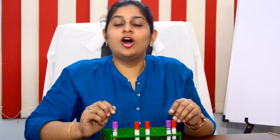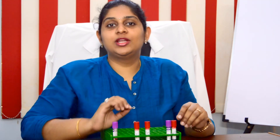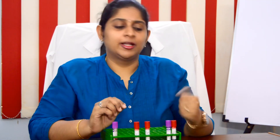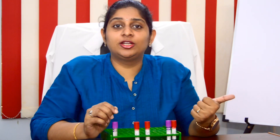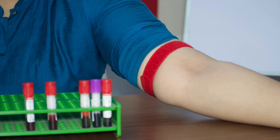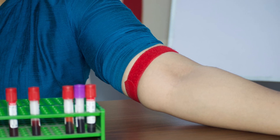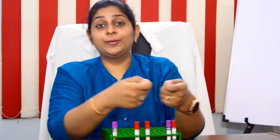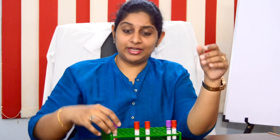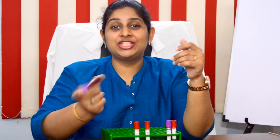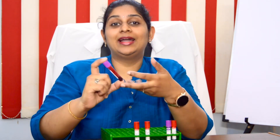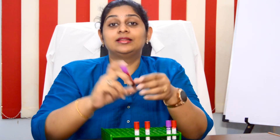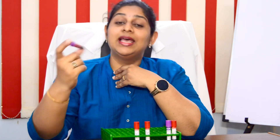Now let's look at the most common factors for hemolysis and how to prevent them. The first cause: during phlebotomy, applying the tourniquet too tightly will cause hemolysis. Second: while withdrawing blood, pulling the plunger of the syringe too fast or too slowly will also cause hemolysis. Third: once you have withdrawn the blood, vigorously shaking it to mix with the EDTA will again cause hemolysis.